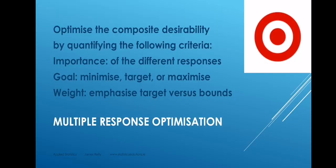In some cases, we have multiple responses that we wish to optimize. So we may have, let's say for a paper airplane, we might want to maximize the distance traveled, but minimize the cost and also maximize the lifetime. So we may have these multiple responses that are of interest to us, and we can optimize the composite desirability by taking all of these responses into account. And we need, in order to do that, we need to quantify the following criteria.